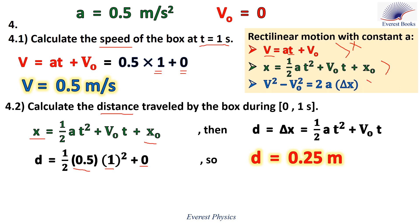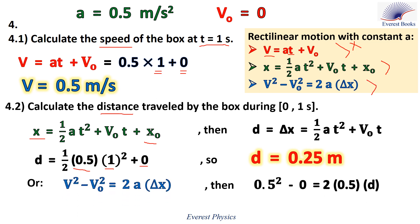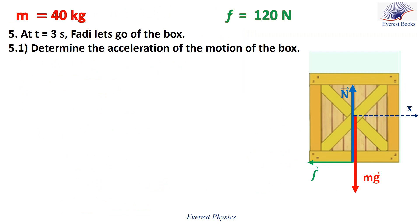Let's verify using the third equation. The speed at time one second is 0.5 meters per second, the acceleration is 0.5 meters per second squared, and the initial speed is zero. Then the distance is also 0.25 meters. At time three seconds, Fadi lets go of the box.